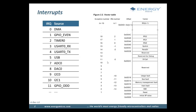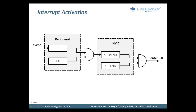When an interrupt occurs, the NVIC will look up the corresponding interrupt handler in the vector table and then transfer execution to this interrupt handler. Interrupt activation is controlled in two steps. An interrupt must be enabled both in the peripheral registers and in the interrupt controller. Each peripheral in the EFM32 that can generate interrupts contains at least two registers: the interrupt flag and the interrupt enable registers. When an event occurs in a peripheral, such as a packet arriving on a UART line or a timer overflowing, the corresponding bit in the interrupt flag register is set. If the same bit is also set in the interrupt enable, an IRQ event is sent to NVIC and the IRQ is marked as pending.